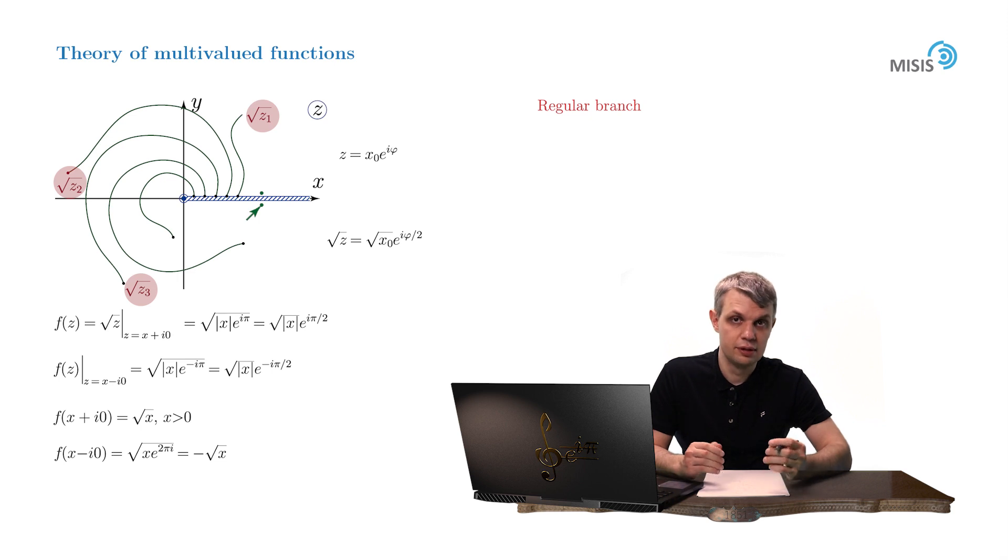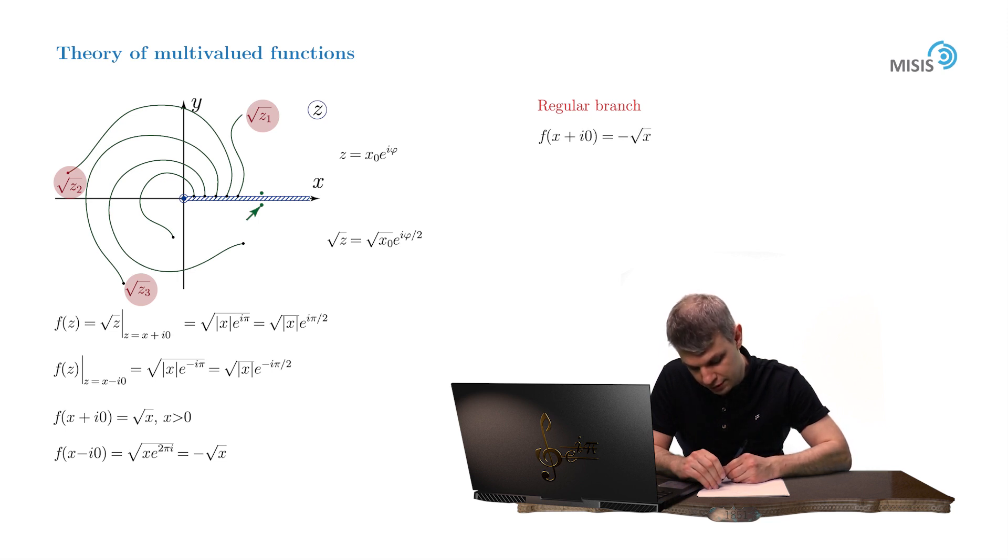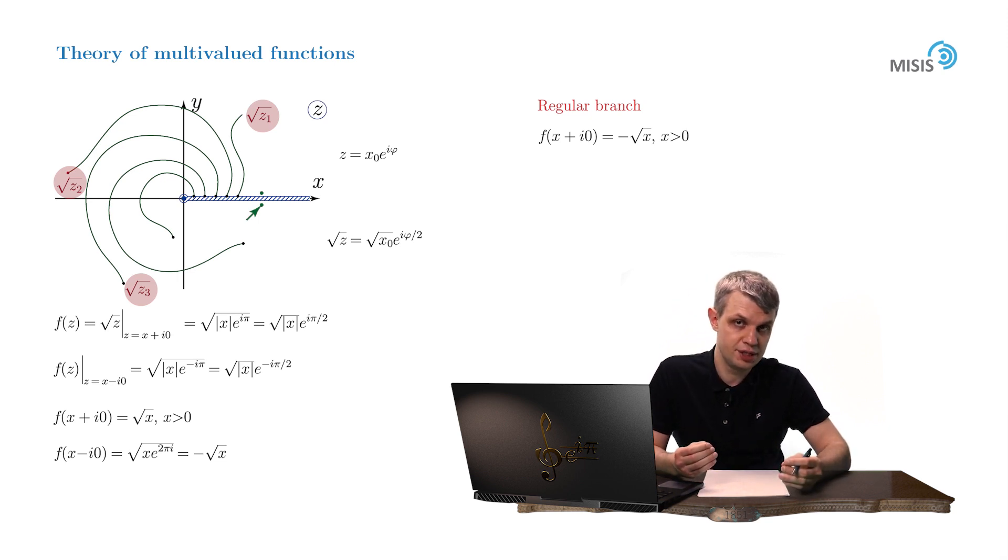We could say that our square root function assumes negative values on the upper bank of the branch cut. So f(x + i0) is equal to negative square root of x for positive x. Then, by connecting the upper bank of the branch cut with the rest of the points in the complex plane by some contours,